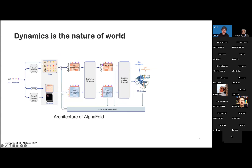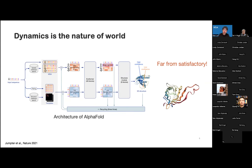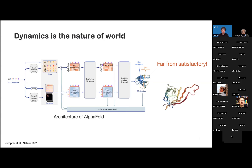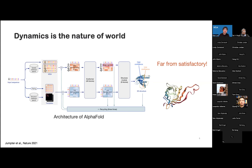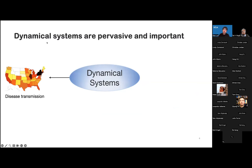We start from the first example. We know that AlphaFold can be used to predict the 3D structure of proteins, but proteins are always moving. So if we only predict the static 3D structure of proteins, it is far from satisfactory. We need to model the dynamic structure instead. Generally, we believe that dynamics is the nature of the world — the real world is 4D instead of 3D. The problems of dynamical systems are pervasive and important.